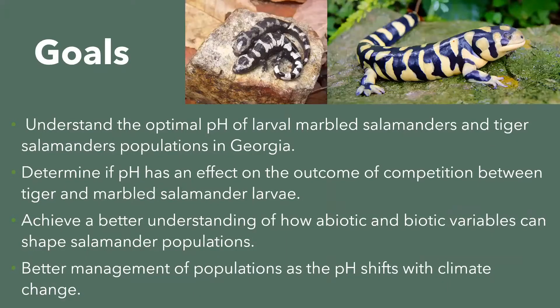My goals for this study are to understand the optimal pH for larval tiger salamanders in Georgia, determine if pH has an effect on the outcome of competition between tiger and marbled salamander larvae, achieve a better understanding of how abiotic and biotic variables shape salamander populations, and better figure out how to manage populations as pH shifts with climate change. This is especially important since tiger salamanders have just been listed as a species of concern in Georgia.